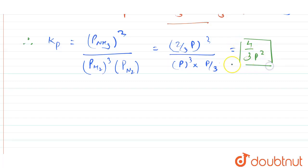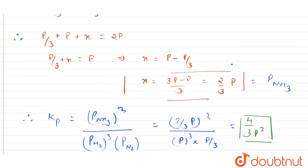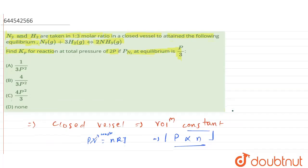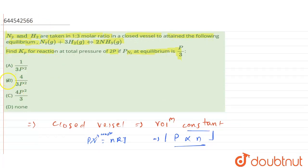So this is the value we got for KP. Now let's see if this option is there or not in the question. So if you see option number B, we have 4 by 3P square. So this will be the correct answer for this question.